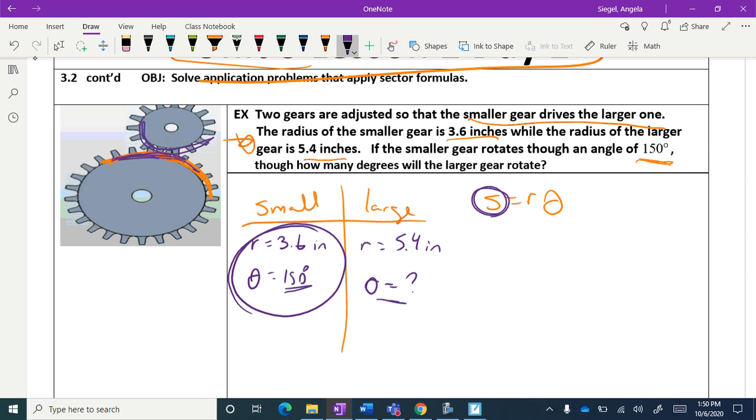But the s's are going to be equal, so the arc length is going to cover the same amount out here as it's going to be in here. If I went 3.6 inches here and it's 150, well I'm going to go 3.6 inches on this side, so those s's are going to be the same.